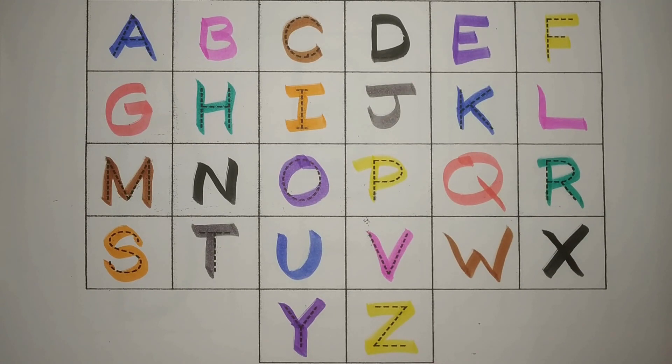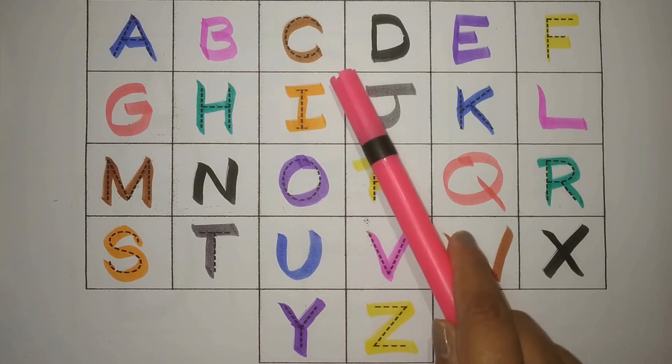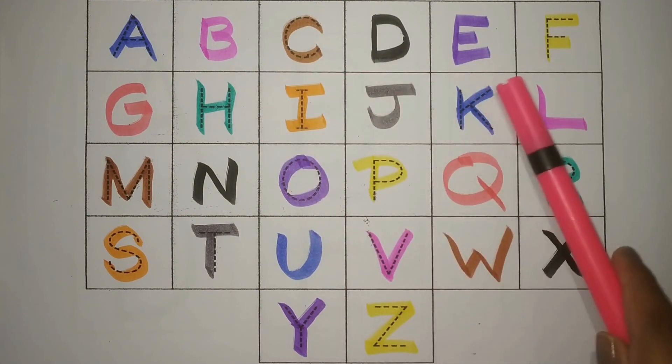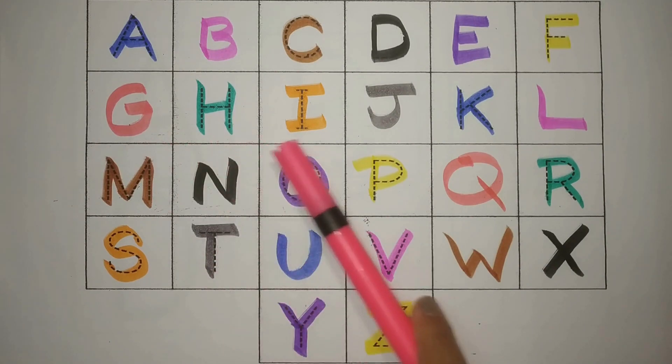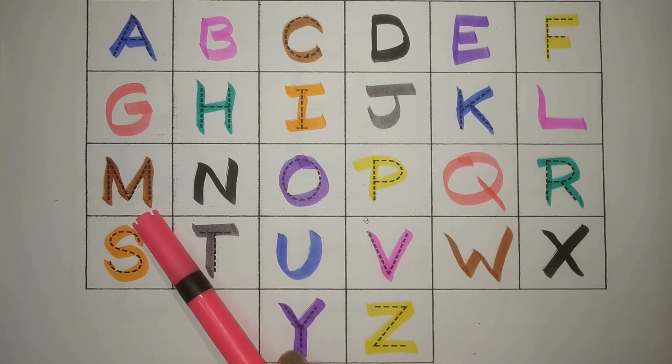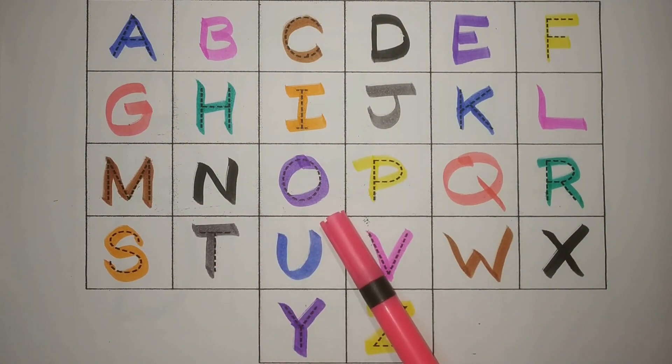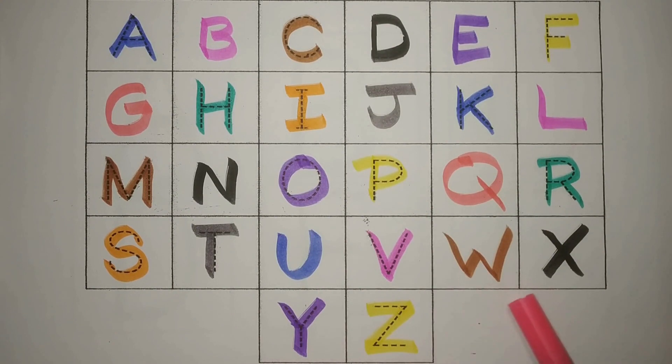Let's revise! Chalo, phir se karate hain! A, Blue, B, Pink! C, Brown, D, Black! E, Purple, F, Yellow! G, Red, H, Green! I, Orange, J, Gray! K, Blue, L, Pink! M, Brown, N, Black! O, Purple, P, Yellow! Q, Red, R, Green! S, Orange, T, Gray! U, Blue, V, Pink! W, Brown, X, Black! Y, Purple! And Z, Yellow!